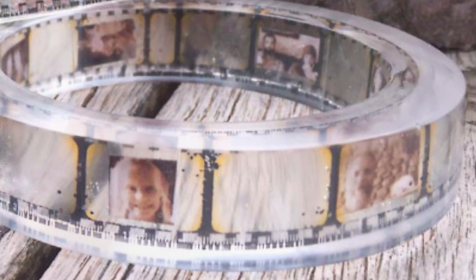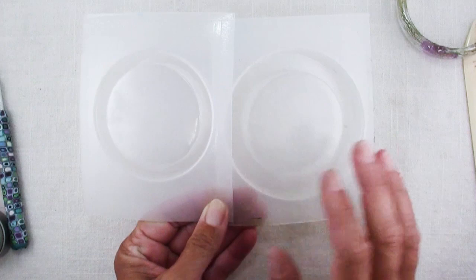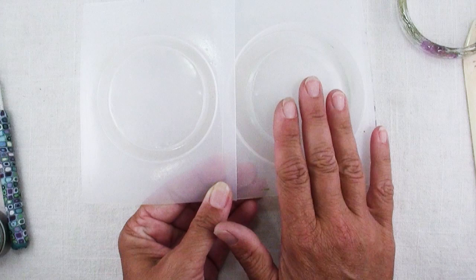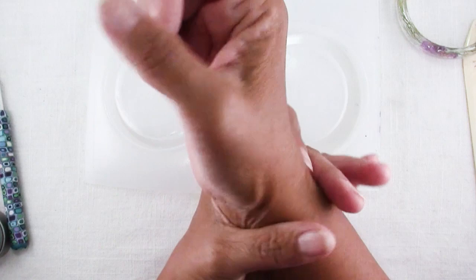So the folks at Resin Obsession sent me a couple of their bangle bracelet molds. I'll have all the information for which molds these are. This is their chunky bangle mold and this is their bangle bracelet mold. If you go onto their website, they'll have all of the information for the inside diameters of these and you can compare them with the inside diameter of bracelets that you know will fit so that you can get the size you want, but these work perfectly for me and I have an average size wrist about a seven-ish.